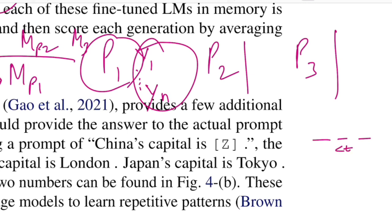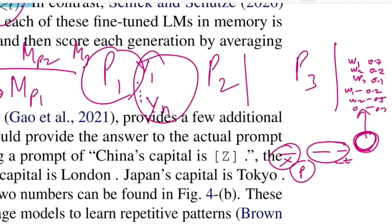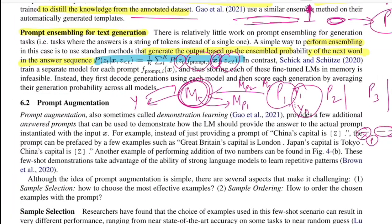For example, given prior words and input x with prompt p, prompt one might give word w1 probability 0.1, w2 some value, w3 some value; prompt two gives w1=0.2, w2=0.5, w3=0.3; and similarly for more prompts. You compute the average probability for each word across all prompts, and the word with the highest average is selected at that timestep.